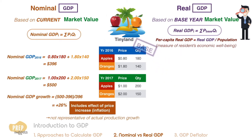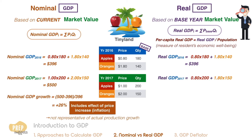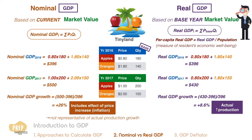If we take 2016 as the base year, the real GDP for 2016 will be the same as nominal GDP. For 2017, we use 2016 prices to calculate the real GDP. Plugging in the appropriate prices, we get $430. So in fact, the real GDP growth for 2017 is just 8.6%, which is the actual increase in production for 2017 after removing the effect of price increases.